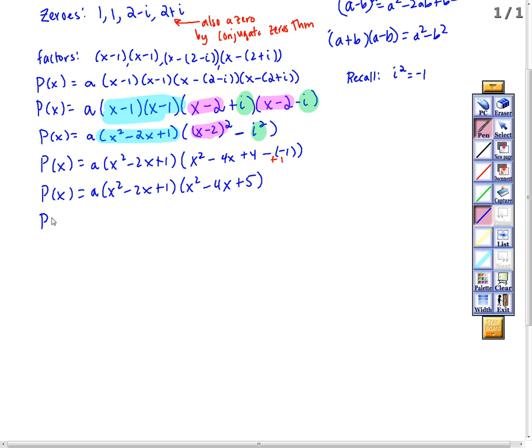Then I'm going to take every single term in the second polynomial multiplied by x squared. I'm going to take every term in the second polynomial multiplied by negative 2x and then every one by positive 1. So this is a times x squared times x squared is x to the fourth, x squared times negative 4x is minus 4x cubed, x squared times 5 is plus 5x squared.